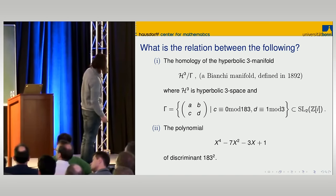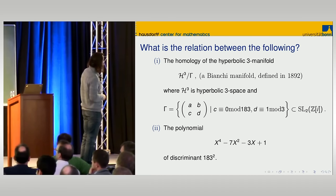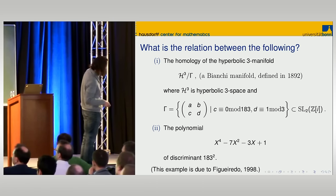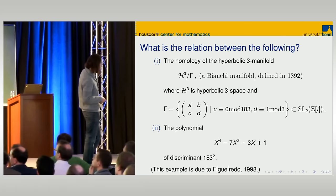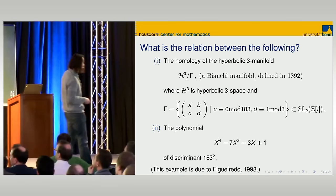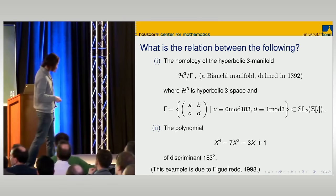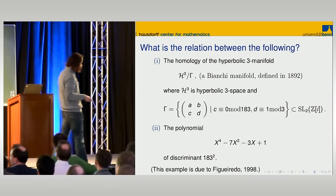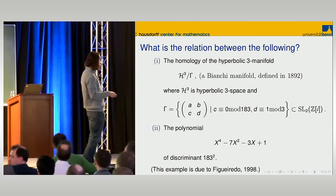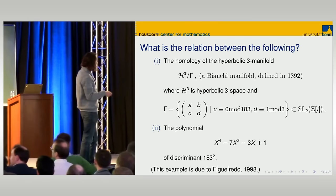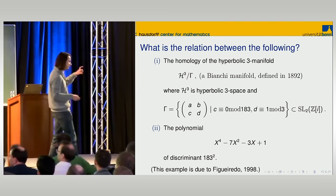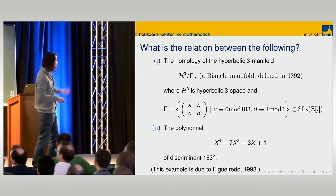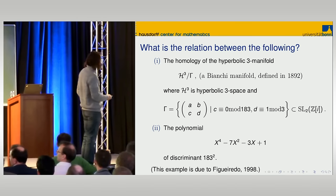Of course there's more to this. This example was computed by Figueiredo in 1998. Even then, what Figueiredo could observe was somewhat empirical evidence that there is a relation between these two objects. To actually prove this, he couldn't prove it at the time.